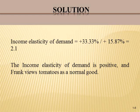Next, we calculate the percentage change in income: (34,000 minus 29,000) over (29,000 plus 34,000 over 2), times 100. This gives us plus 15.87 percent.